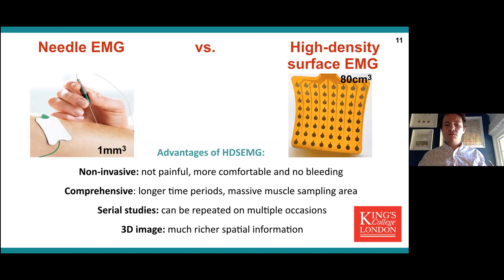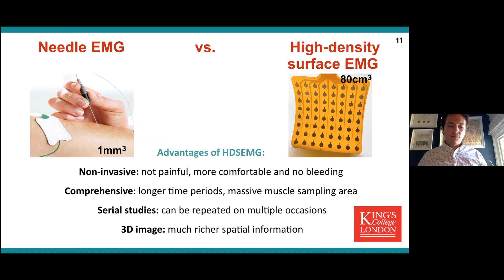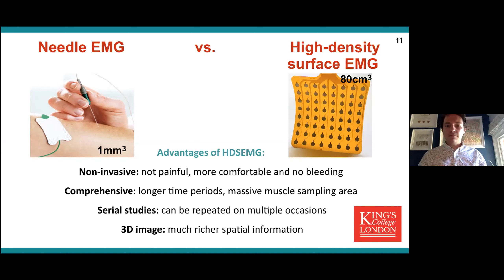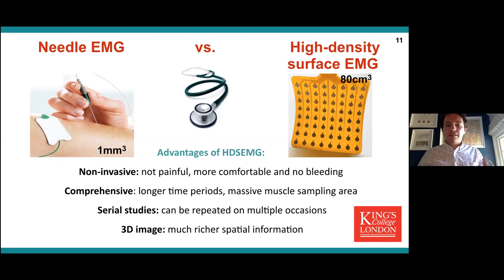Patients don't mind having this done repeatedly, which is a real bonus for a disease that changes quite rapidly over the course of a year or two years. You also build up a much richer 3D image of what's going on. I explain this to my patients as though we have 64 eyes all looking in on the muscle — we like to think of it as the stethoscope of neuromuscular medicine.